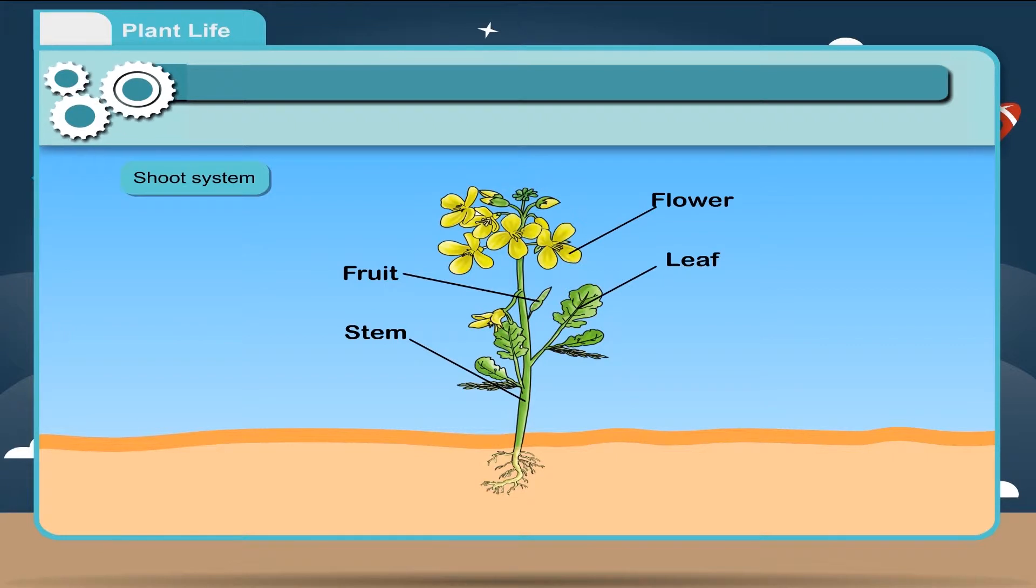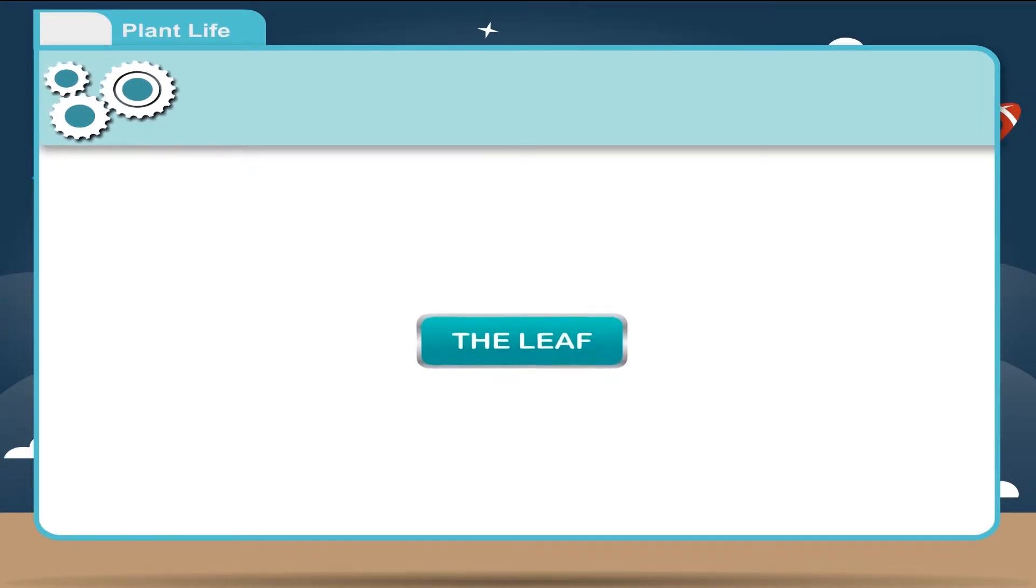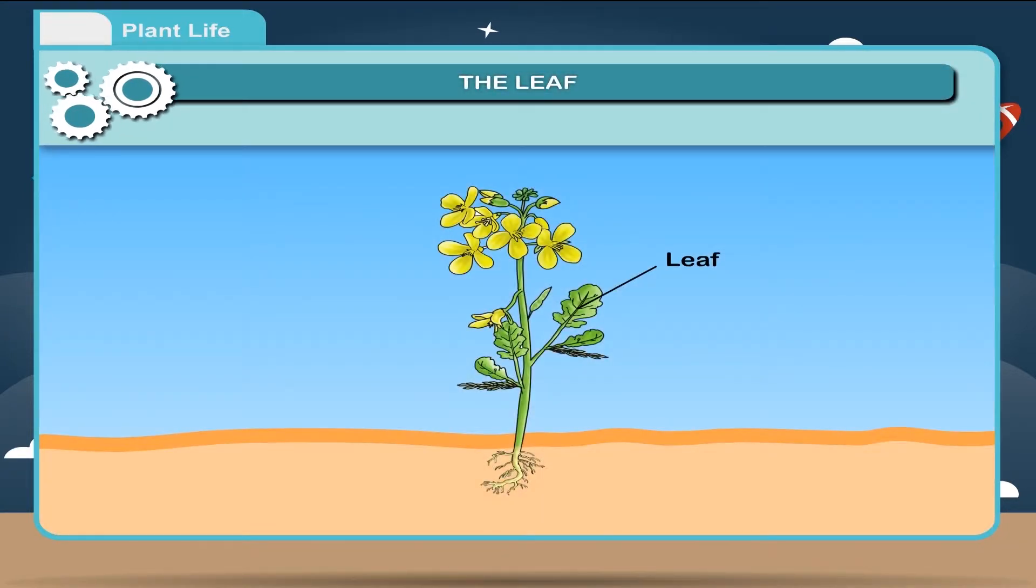We will learn about the leaf and the flower parts of a plant in details. The leaf. Leaf is one of the most important part of the shoot. It is called the kitchen or food factory of the plant.